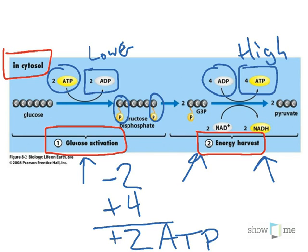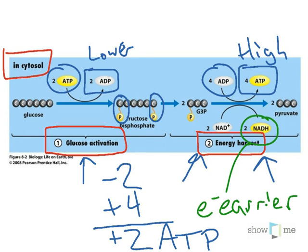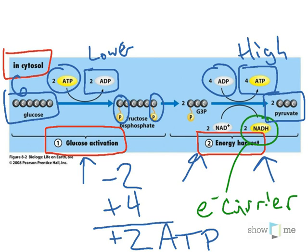There is one other high energy molecule produced during glycolysis: NADH. NADH is a high energy electron carrier, and it is going to carry these electrons into the next set of reactions. The final product of glycolysis is two molecules of pyruvate. So we've taken one six-carbon molecule of glucose and split it down to two three-carbon molecules of pyruvate, and there is still a good bit of energy in this pyruvate molecule.